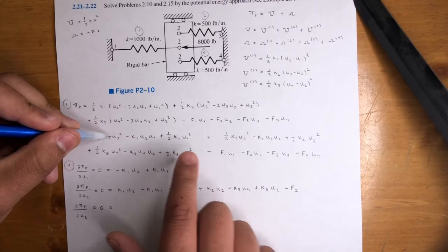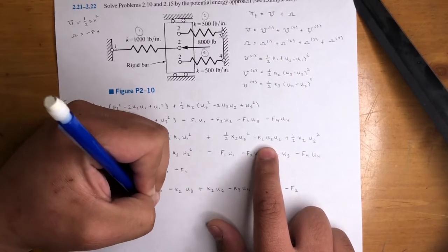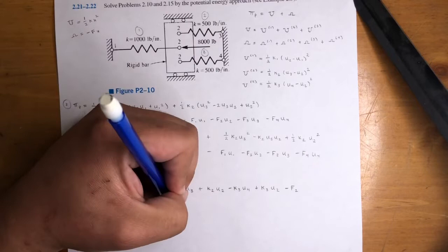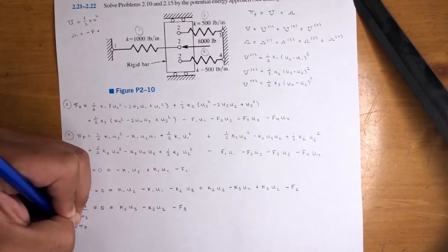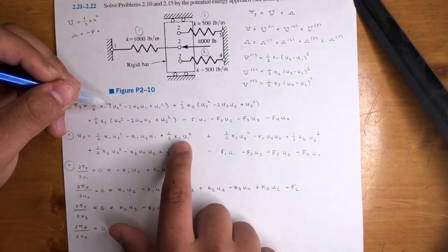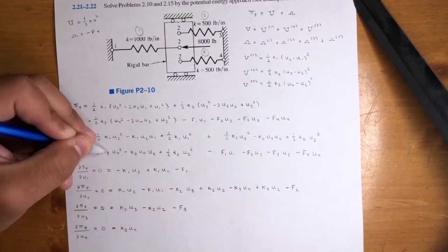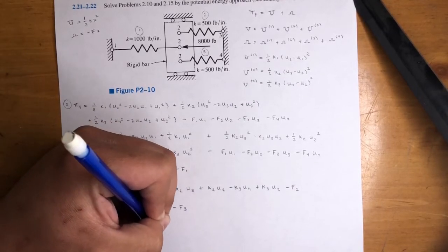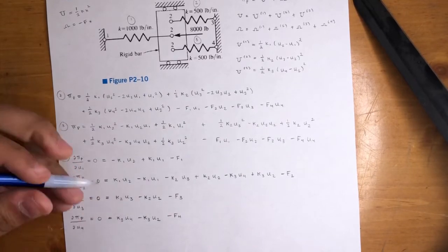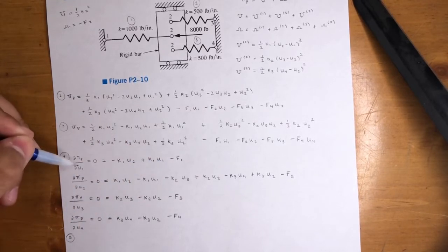For the partial with respect to u3: k2·u3 minus k2·u2 minus f3 = 0. For the partial with respect to u4: k3·u4 minus k3·u2 minus f4 = 0. Moving all the force terms to the right-hand side makes them all positive: f1, f2, f3, and f4.